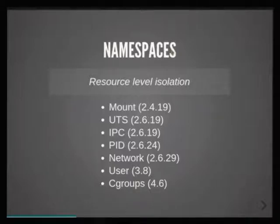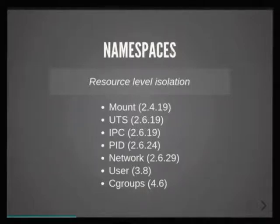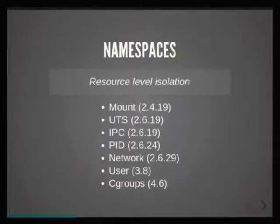There are a couple of namespaces — the list is complete — and you can see in which kernel version each was introduced. The mount namespace isolates mount points so you can have different views of the file system. Then you have hostname, IPC, PID, network, users, and cgroups. Because it's hierarchical, every process is always in some namespace. A process is always in all seven types of namespaces, but they will be different — so you can mix them together in different ways.